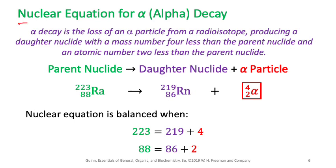Now let's talk about nuclear equations — how we show the decay of any particle, whether alpha, beta, or gamma rays. Just as we balance the number of atoms on both sides of a chemical equation, in a nuclear reaction we balance the mass number and the atomic number for all nuclei taking part in the reaction.